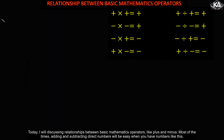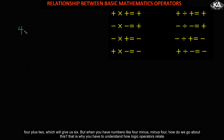Today I'll be discussing the relationship between basic mathematics operators like plus and minus. Most of the times, adding and subtracting direct numbers will be easy when you have numbers like four plus two, which gives us six. But when you have a number like four minus minus four, how do we go about this?